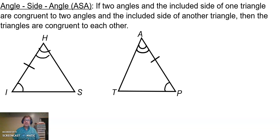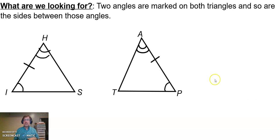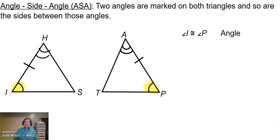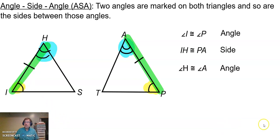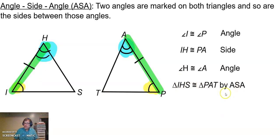Angle-Side-Angle: the theorem says if two angles and the included side of one triangle are congruent to two angles and the included side of another triangle, then the triangles are congruent. We're looking for two angles to be marked in each triangle and the side between those angles — two angles, side in the middle. Angle I is congruent to angle P, IH is congruent to PA, and angle H is congruent to angle A. Triangle IHS is congruent to triangle PAT by Angle-Side-Angle. I is the yellow angle, P is the yellow angle; H and A are the blue angles, both second; S and T have nothing marked.